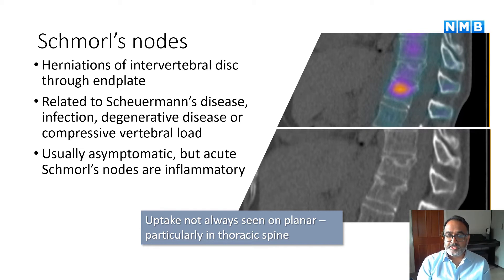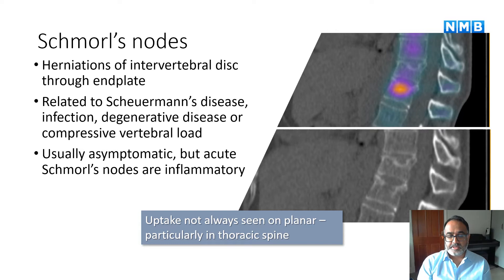Schmorl's nodes are herniations of the intervertebral disc through the endplate. They can be related to Scheuermann's disease, infection, degenerative disease, or compressive vertebral loading. They are usually asymptomatic, but acute Schmorl's nodes are inflammatory and can be painful, and are often avid on SPECT CT in the acute phase. In the chronic phase, the uptake reduces to normal background vertebral activity. Importantly, you may not see the uptake on a planar bone scan, so if you are concerned about spinal pain, you should perform a SPECT CT.